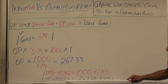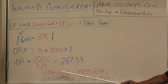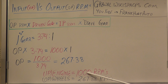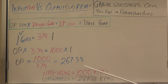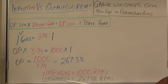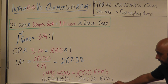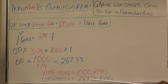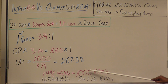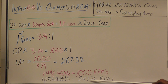To put everything in perspective: if your engine is running at 1,000 RPMs in first gear and we take out the differential, the wheels will be spinning at 267 RPMs. So in first gear you have low RPMs but more torque — you can take off from a stop at a red light or stop sign.